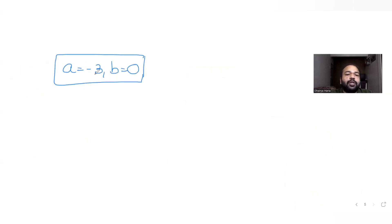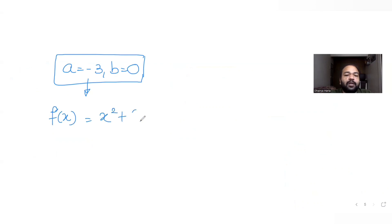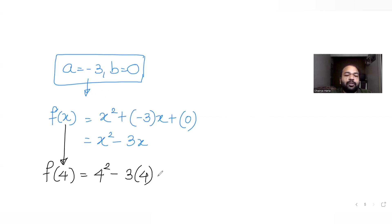With a = −3 and b = 0, substituting into f(x) = x² + ax + b gives f(x) = x² − 3x. To find f(4): f(4) = 4² − 3×4 = 16 − 12 = 4.